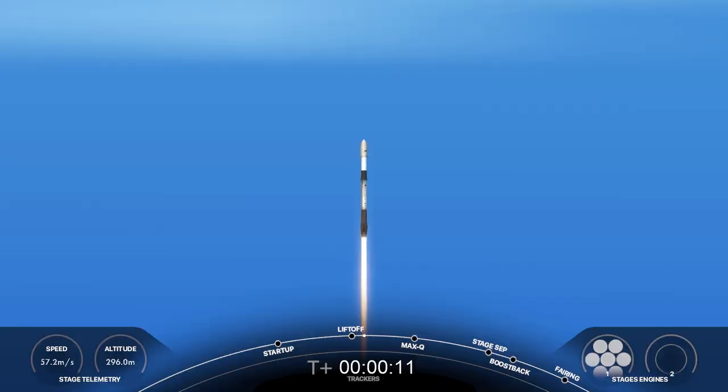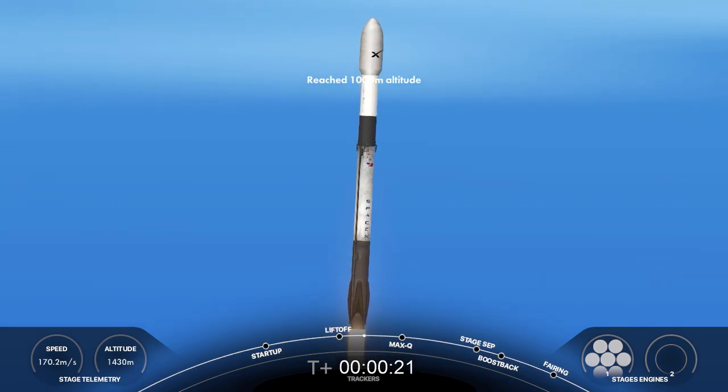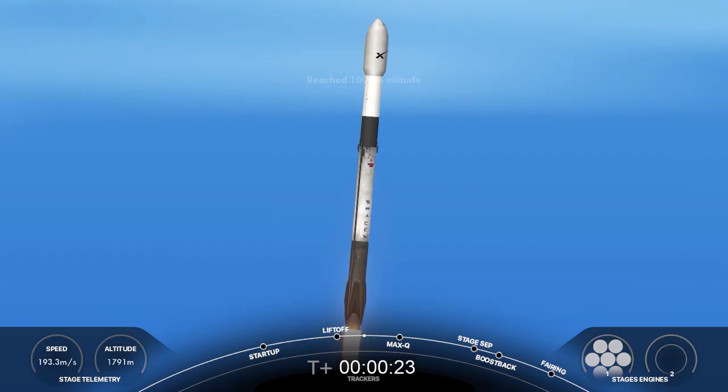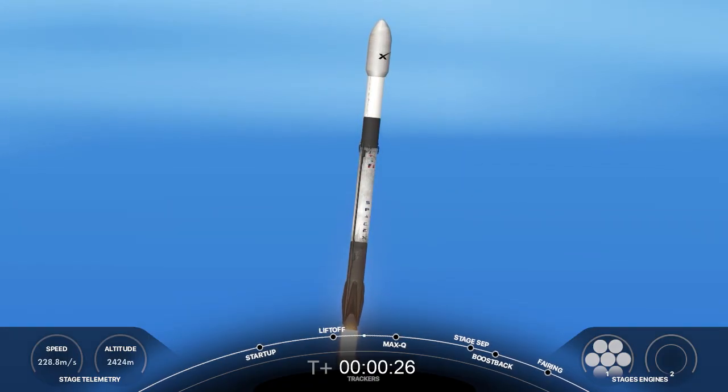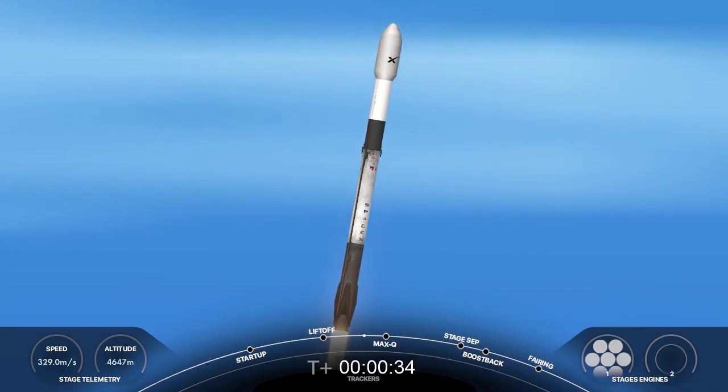Vehicle is pitching downrange. At T plus 30 seconds and counting, Falcon 9 has successfully lifted off from Space Launch Complex 4E. After clearing the tower, we now tilt or gimbal the engines to initiate a roll maneuver, which you may notice here in that Stage 1 camera view. Falcon 9 power and telemetry are nominal.